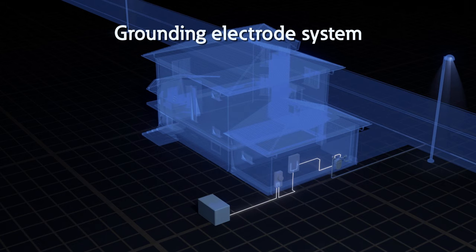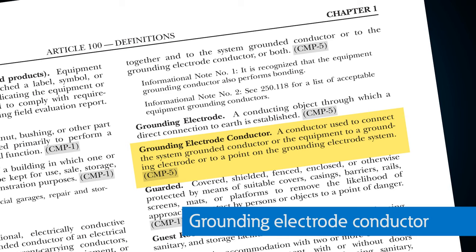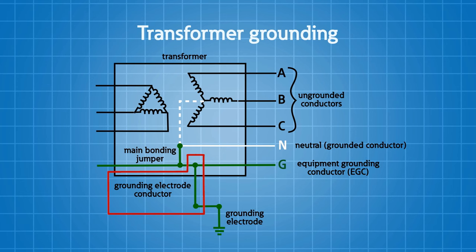The grounding electrode system is when we pull all of those grounding electrodes together. Every grounding electrode on that site — whether it be the UFER ground, the water pipe, or other means identified in the NEC — we have to pull all of those together as a system. Now let's talk about the grounding electrode conductor: this is the conductor used to connect the system neutral conductor, grounded phase conductor, or the equipment to the grounding electrode system.